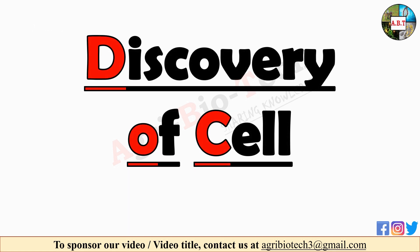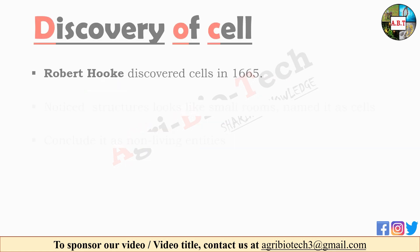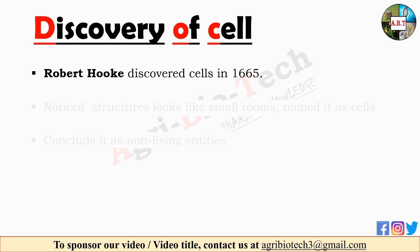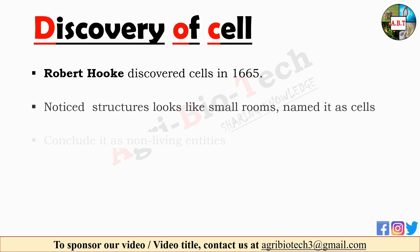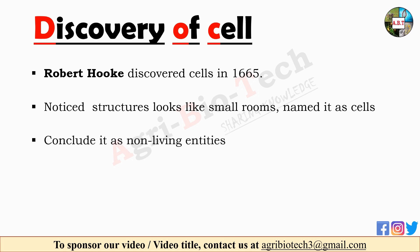Now have a look at the discovery of cell. Robert Hooke was the first biologist who discovered the cell in the year 1665. Robert Hooke observed a piece of bottle cork under the microscope and noticed structures that looked like small rooms, and he named these rooms as cells. However, his microscope had limited magnification and hence he could not see any detail in the structure. Because of this limitation, he concluded that these were non-living entities.